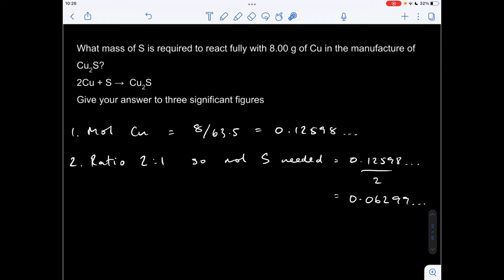So the ratio is telling us that for every mole of copper, we need half as many moles of sulfur to react with it. So if we've got this many moles of copper, we need that divided by two moles of sulfur, which gives us that calculated value there. So the mass of sulfur, moles times MR, 2.02 grams to three significant figures.